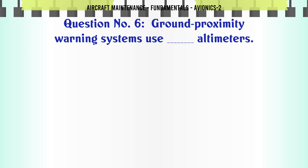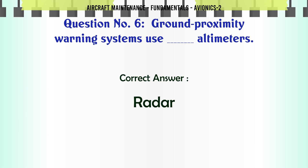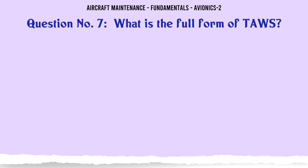Ground Proximity Warning Systems use which type of altimeters? A. Radio, B. Sound, C. Radar, D. Pressure. The correct answer is Radar.